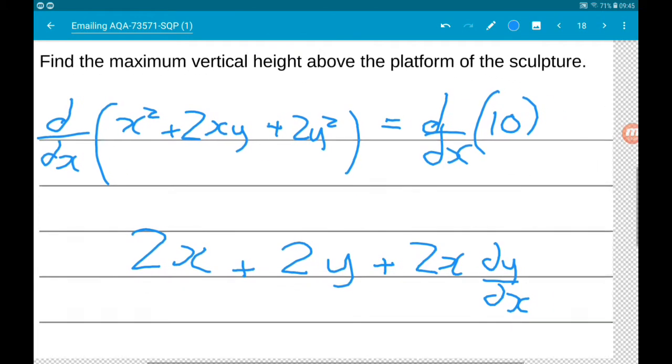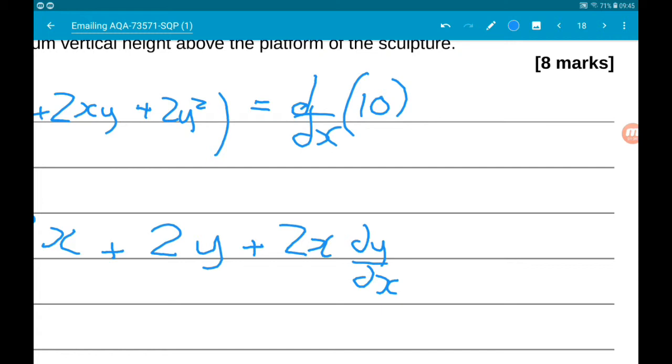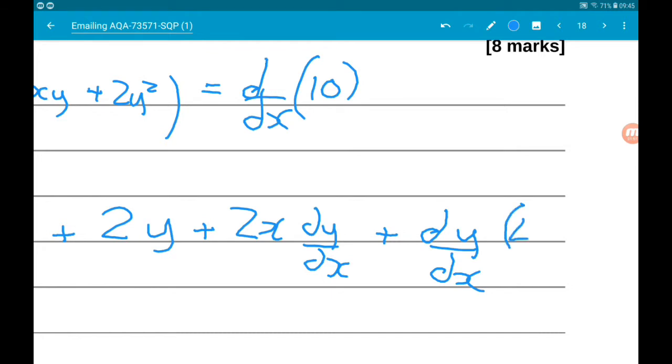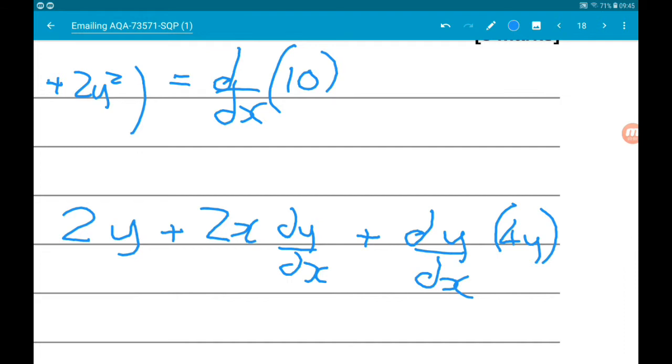And now with 2y², we need to use the chain rule. So if we differentiate y first, we get dy/dx. And then if we differentiate 2y² with respect to y, we get 4y. So it's dy/dx times 4y and then on the right the derivative of 10 with respect to x is 0.